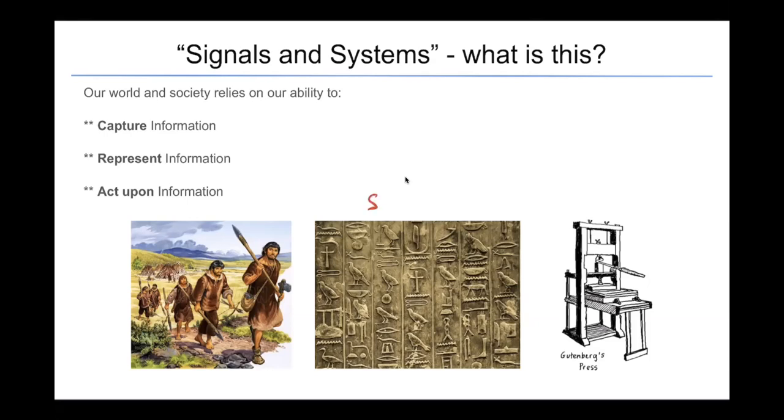This is what actually powers our transformation as a society from hunters and gatherers on the left hand side to one that had a written record of history. So this could be like a signal. And then we had a system of disseminating that information throughout the world, for example, the Gutenberg press. So this is before EE 102. Then we got to signals, and now we're at systems.